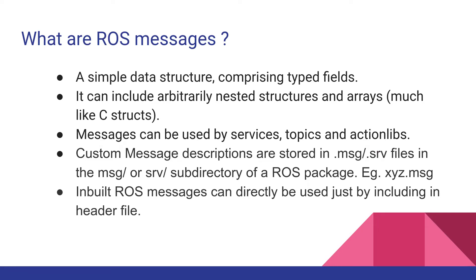The first question we should answer is: what are ROS messages? Simply put, they are data structures comprising different fields. A ROS message is like a struct in C — it can have a bunch of strings, arrays, ints, doubles, etc. ROS messages are used by topics, services, and action libs. If you want to look at custom ROS messages, you can go to any standard package and you will see a folder named MSG or SRV. ROS messages are saved as .msg and service messages as .srv.